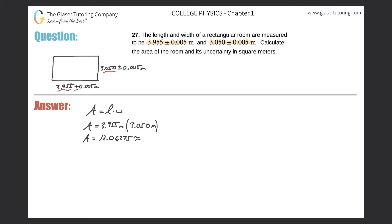We're going to round that to four significant figures, because each of the measured values has four significant figures. So this answer will be approximately 12.06 meters squared. That's the area.